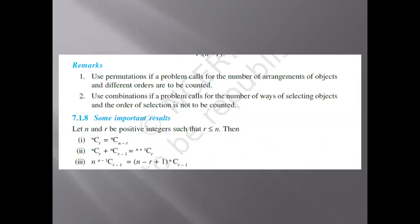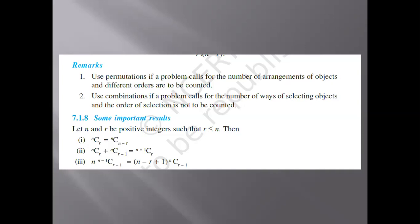Some important results to remember: let n and r be positive integers such that r is less than or equal to n. Then nCr equals nC(n − r). Also, nCr plus nC(r − 1) is always equal to (n+1)Cr. These are some very important results regarding permutation and combination.